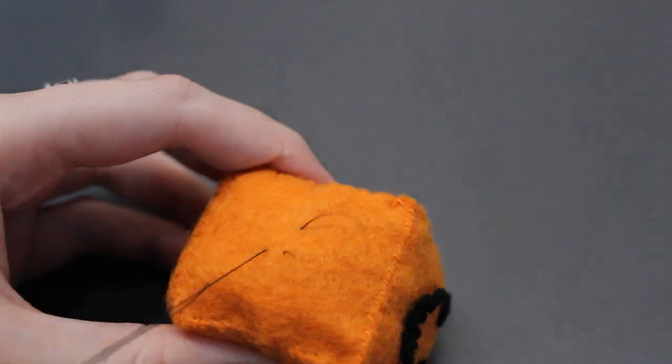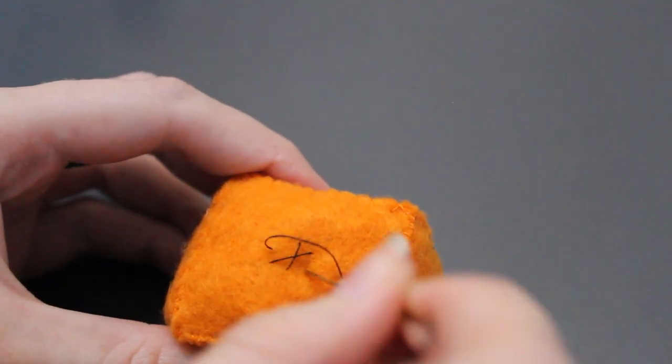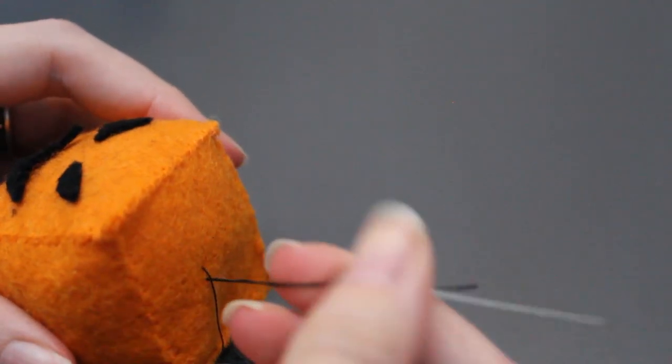On the bottom I made a star, so it seems like, you know, the bottom of a pumpkin. Then I went back to the top and just tie a knot.